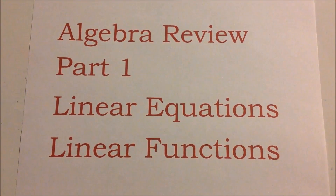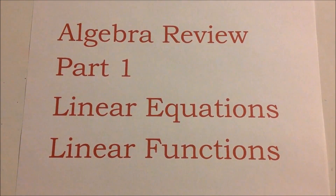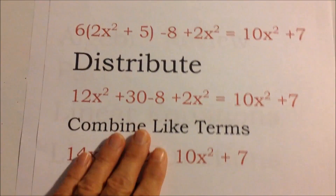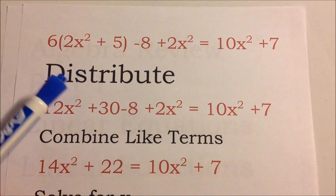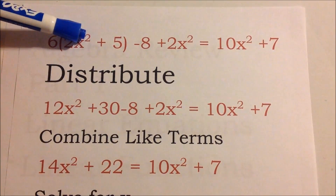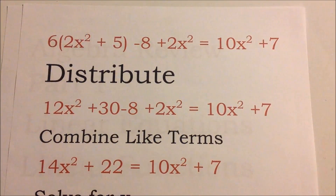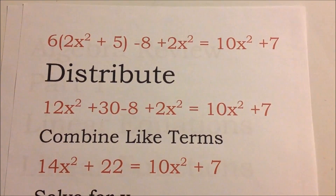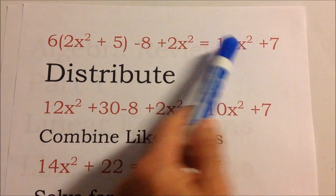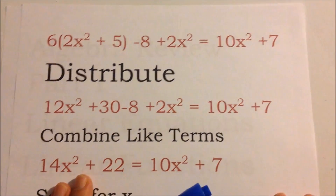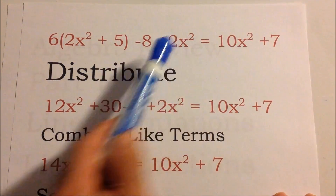Here's a video on algebra part one — we'll talk about linear equations and linear functions. Looking at this example right away, if you see a 2 on top of a variable — anything greater than 1 — you know it's not linear. This will be somewhat like a quadratic equation because it has a 2 on it, but let's look at it anyway.